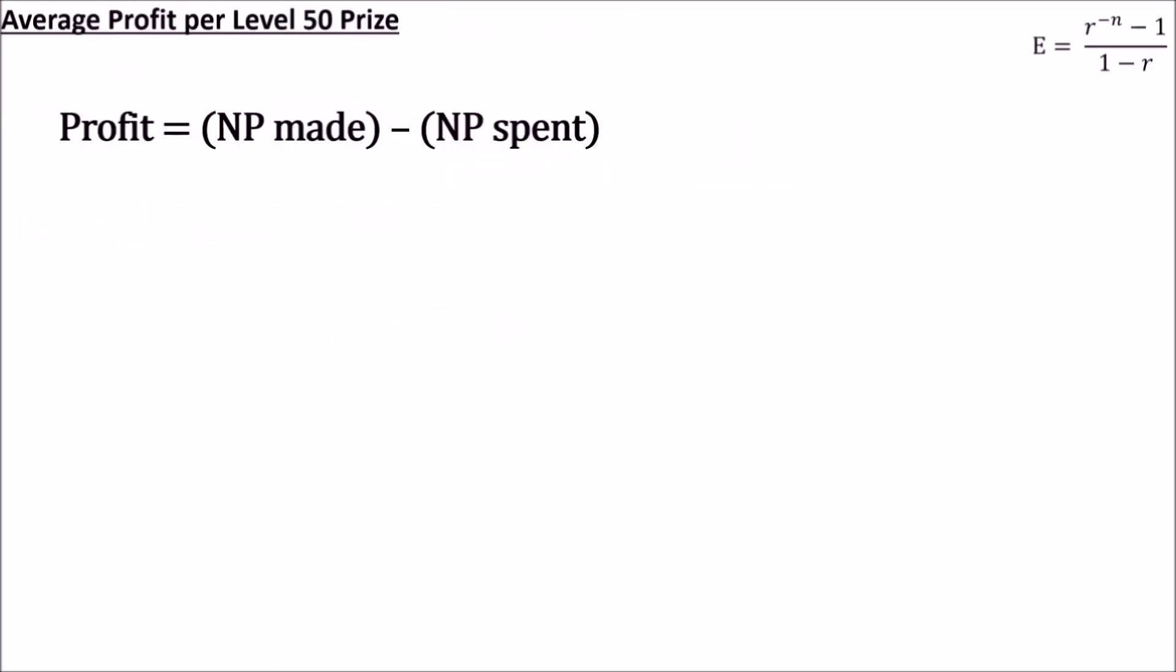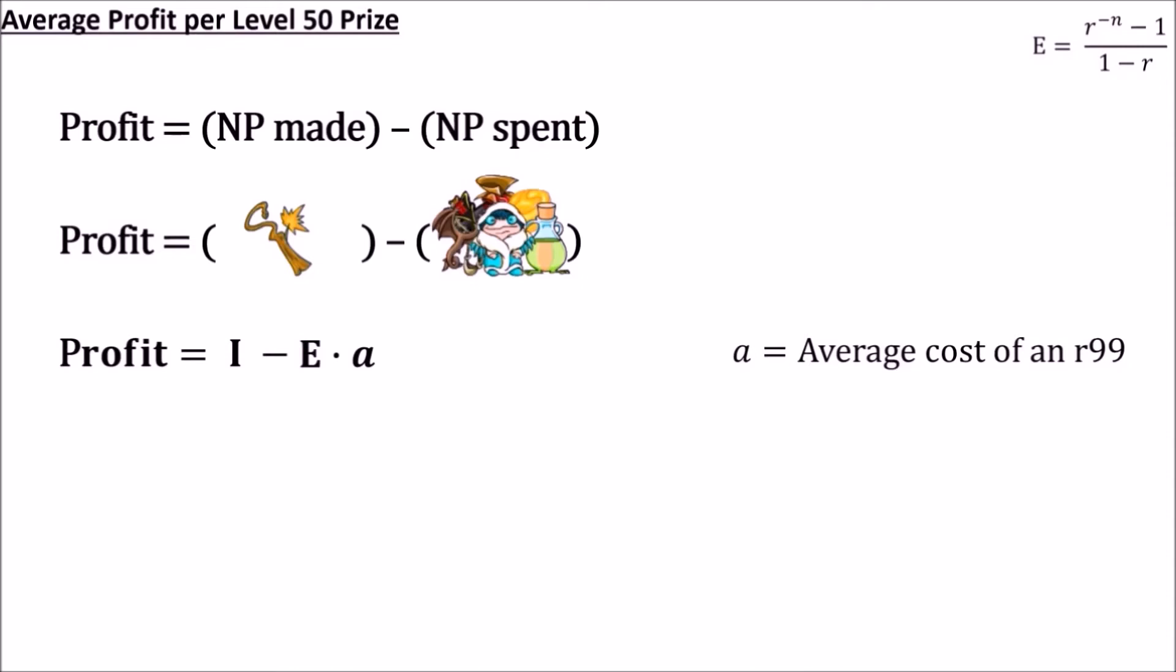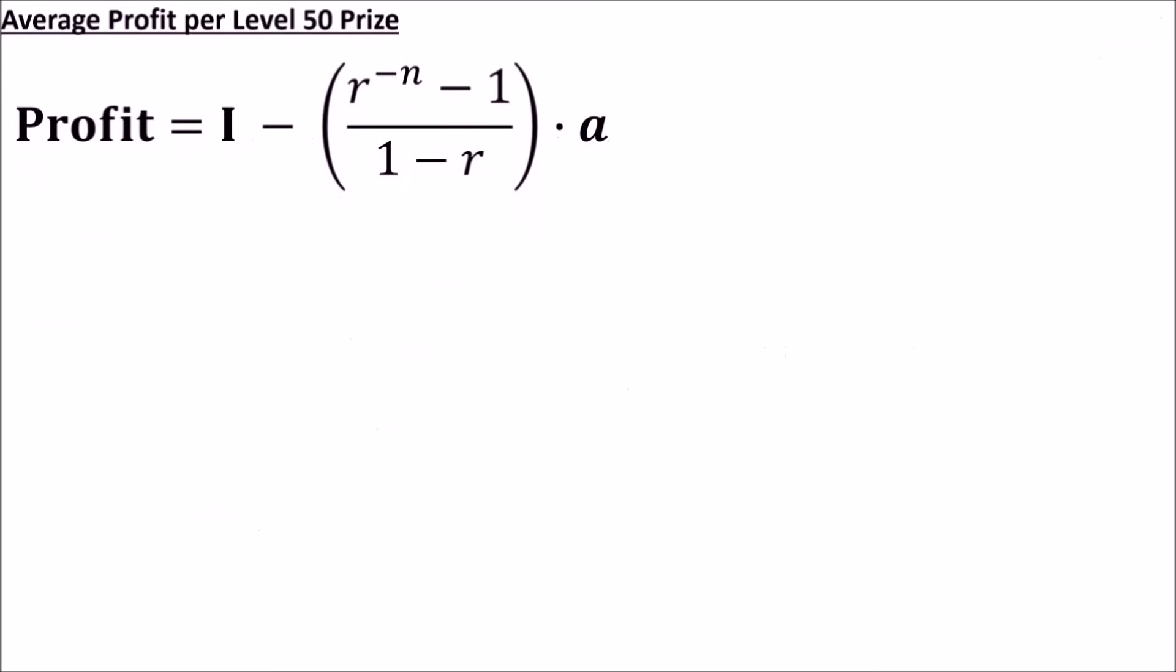We are now ready to calculate our average profit. The profit formula is just money made minus money spent. The intermediate prizes are pretty cheap, so all of your NP made is going to come from the level 50 prize. The NP spent is the total cost of whatever items you used to get that prize, including items used on failed runs. This is what we calculated in the previous section. Writing this equation using variables, we'll let capital I represent the value of Illusion Staff, and the cost will be the number of items used times the average cost of a rarity 99 item. Rewriting E in terms of r and n gives the final form of this equation. Notice that this final equation has only one variable, and that's r, which represents the completeness of your collection. The other three letters, I, N, and A, are all constants with known values, so let's fill them in.